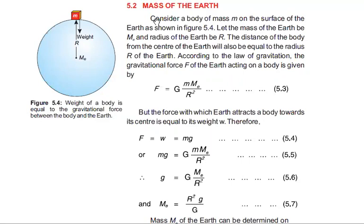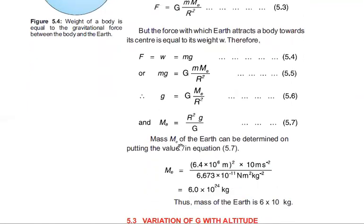So we have mass of Earth. The formula will be Me equals r² g over G.